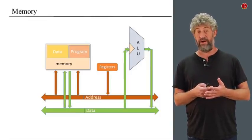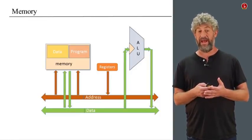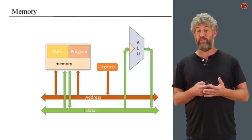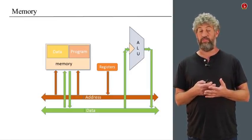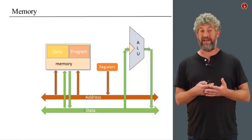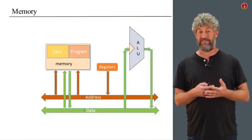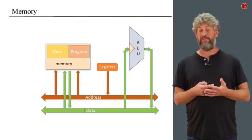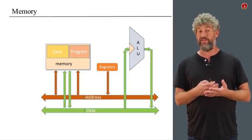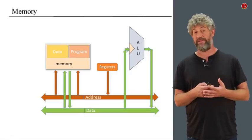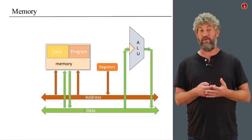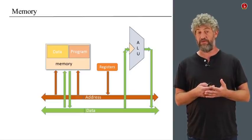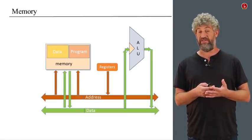The last piece we need to talk about is the memory. We always need to specify what address of the memory we're going to be working with, and that is specified by the address bus. Once we actually work with a certain address, we need to be able to read from it or write into it — get information from it or put information into it. So the input and output of the memory unit will have to be connected to the data bus.